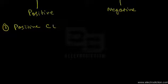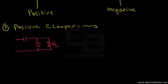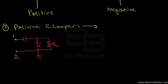In the circuit of a positive clamper, we have a series capacitor connected to a diode, and we have a resistance RL which represents the load resistance across the diode. Let the terminal connected to the capacitor C be called terminal 1, and the one to the anode of the diode be termed terminal 2. The capacitor is called C and the diode is called D.